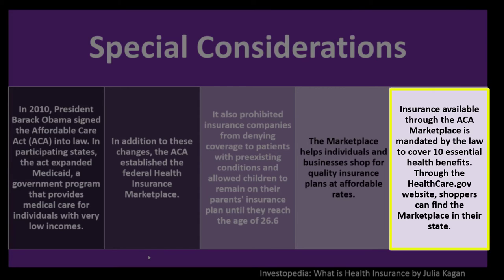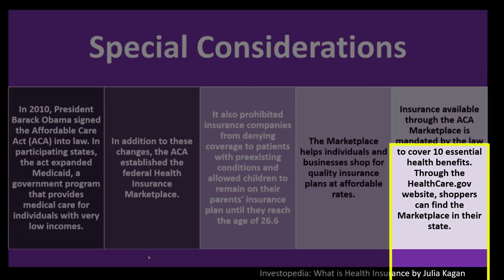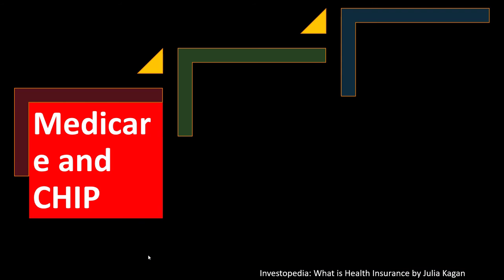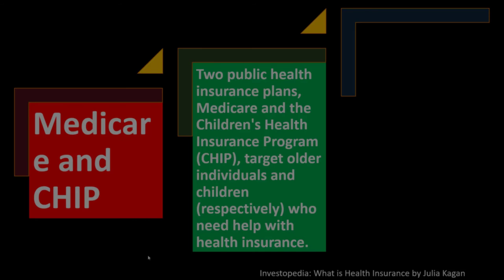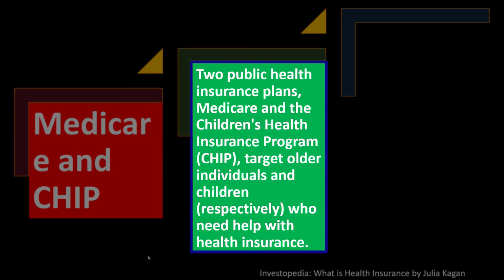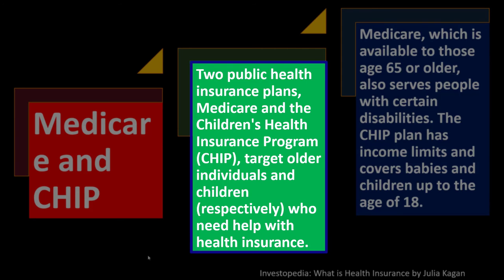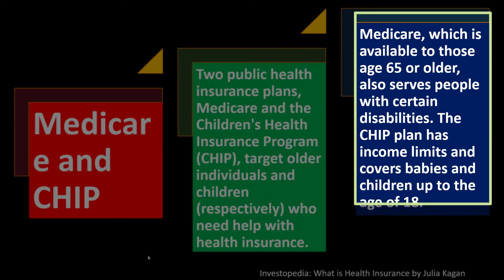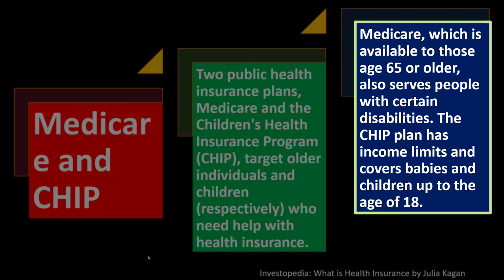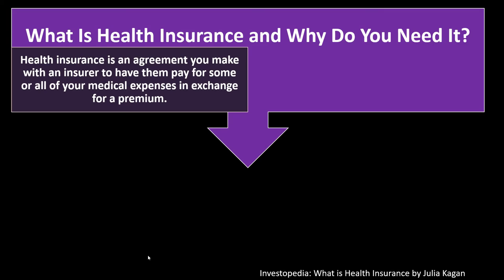We also have Medicare and CHIP — two public health insurance plans. Medicare and the Children's Health Insurance Program (CHIP) target older individuals and children respectively. Medicare is available to those age 65 or older and also serves people with certain disabilities. The CHIP plan has income limits and covers babies and children up to age 18.